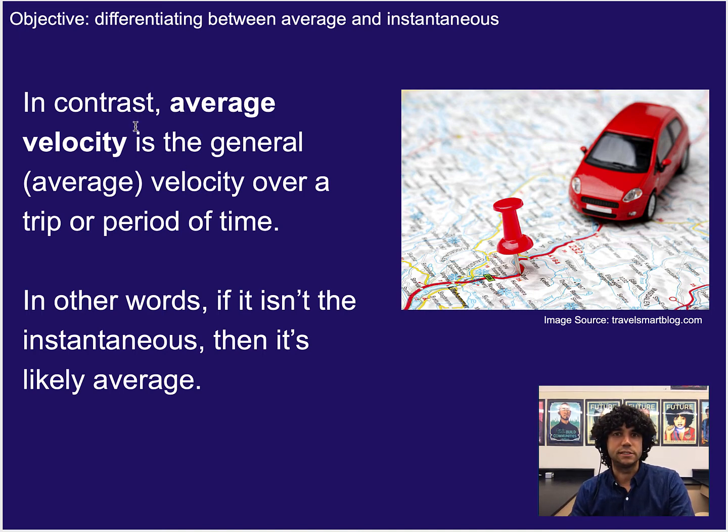But what that means is, is that it's factoring in all of your times where you were moving a little faster, a little bit slower, and it averages them out literally like you add them all up and divide by the number of things that there are. So in other words, another way to think about it is if it's not an instantaneous velocity or an instantaneous measurement, so a measurement at that exact moment, then it basically is an average most of the time.